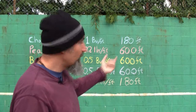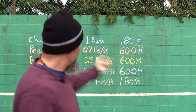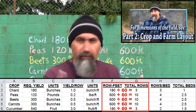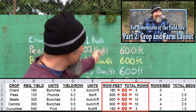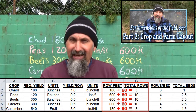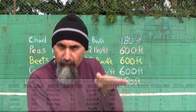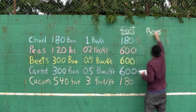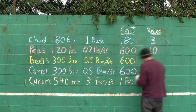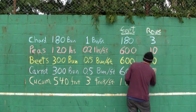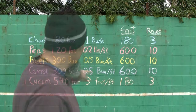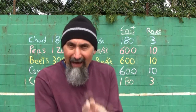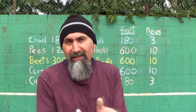To figure out how many rows that equals, we know our rows are 60 feet long. All we do is divide each one of these numbers by 60, and that gives us the total number of rows. When it comes to the total number of rows, we've got three rows of chard, ten rows of peas, ten rows of beets, ten rows of carrots, and three rows of cucumbers.